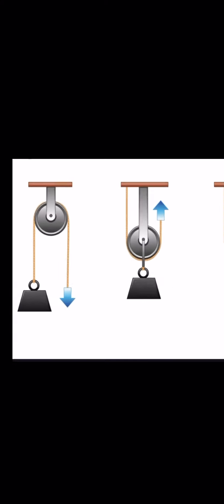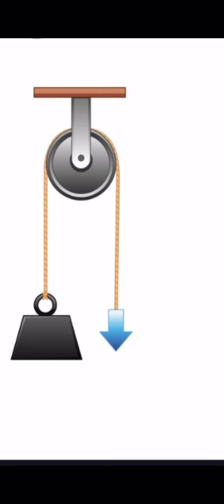The first type is called a fixed pulley. From its name, the grooved wheel itself is not going to move. What will move is only the rope or chain around it, to lift any load or lower any load. In a fixed pulley, the grooved wheel is not moving.